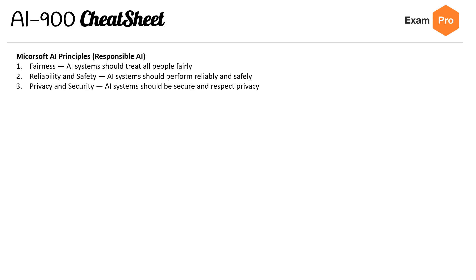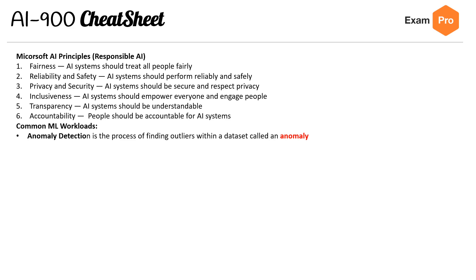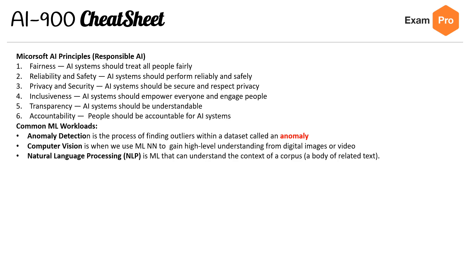On to the fourth sheet: Microsoft AI Principles — Responsible AI. There are six: Fairness (an AI system should treat all people fairly), Reliability and Safety (should perform reliably and safely), Privacy and Security (should be secure and respect privacy), Inclusiveness (should empower everyone and engage people), Transparency (should be understandable), and Accountability (people should be accountable for AI systems). Common ML workloads include: Anomaly Detection — finding outliers within a dataset; Computer Vision — using ML neural nets to gain high-level understanding of digital images and videos; NLP — machine learning that can understand the context of a corpus or body of text; and Conversational AI — technology that can participate in conversations with humans.